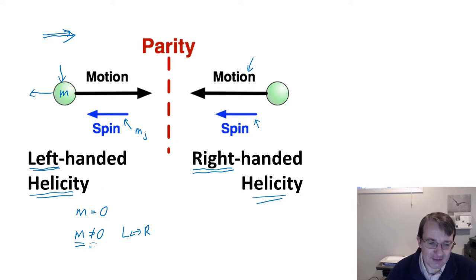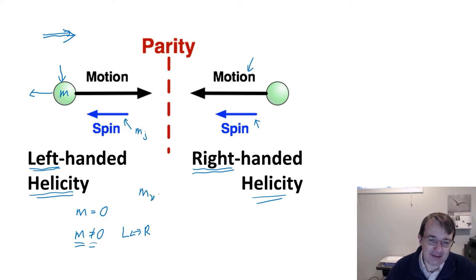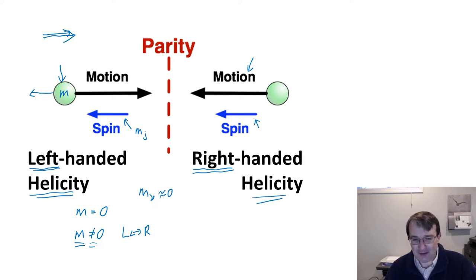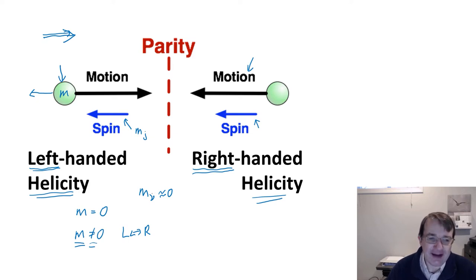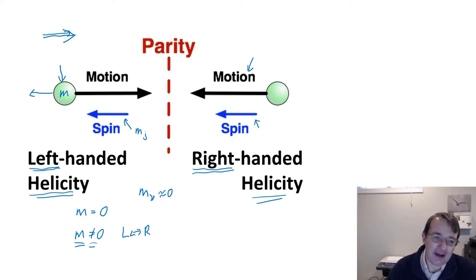For the neutrino, the mass is approximately zero — not exactly zero, but we know it's at the electron-volt level or lower, possibly at the milli-electron-volt level. So the mass is so incredibly small that, for the neutrino, we effectively have it in a left-handed or right-handed helicity eigenstate. It's not 100%, but because the mass is so small it's a very, very good approximation.